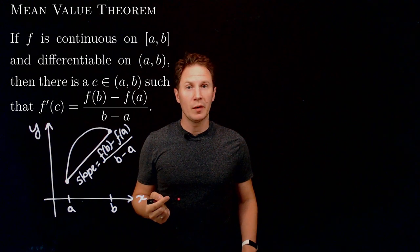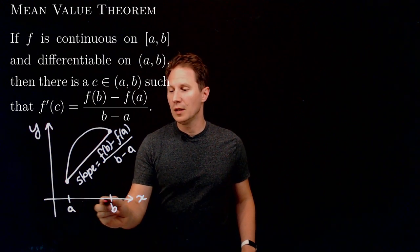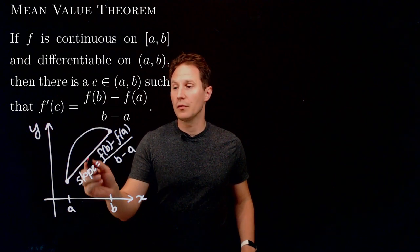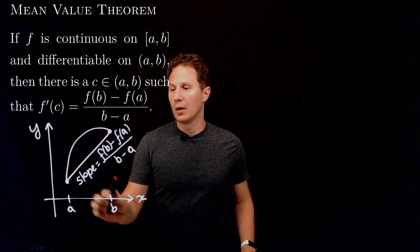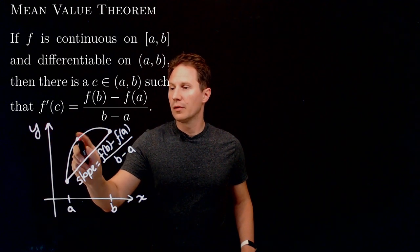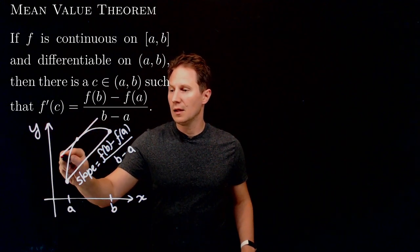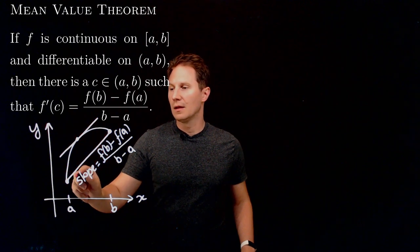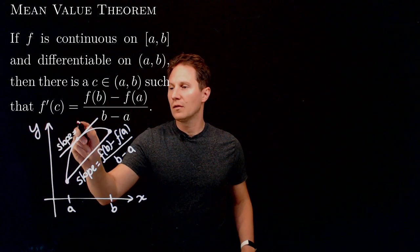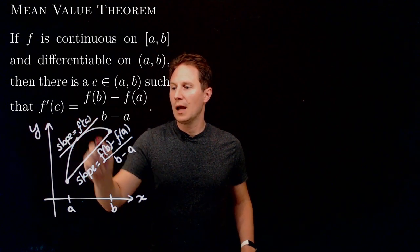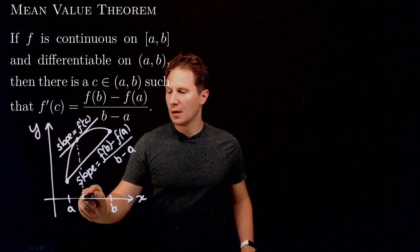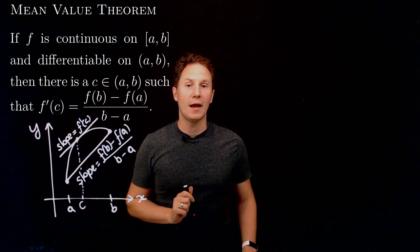According to the mean value theorem there will be a point c between a and b at which the slope of the tangent line to the graph of the function equals this slope. So there will be a point on the graph at which the tangent line is parallel to that secant line. The tangent line will have slope f'(c), equal to the slope of that secant line, happening exactly at point c between a and b.